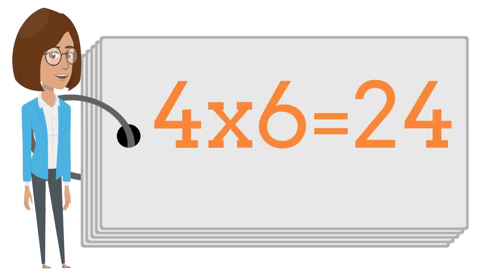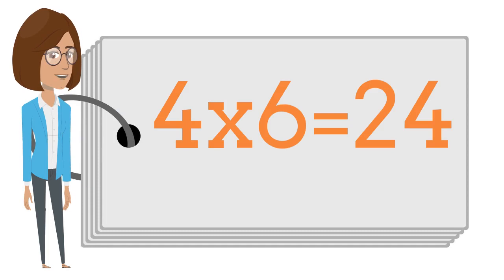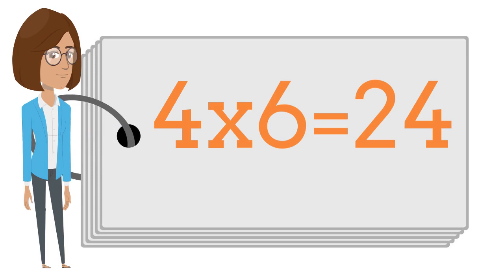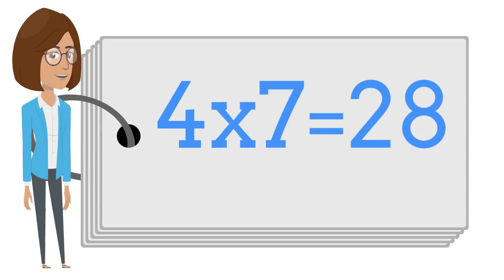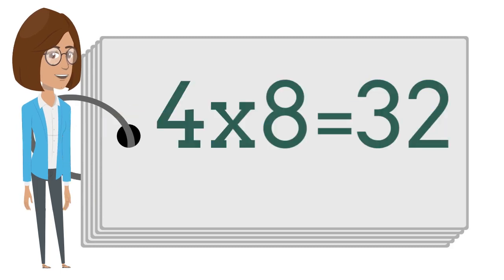4 times 6 is 24. 4 times 6 is 24. 4 times 7 is 28. 4 times 7 is 28.